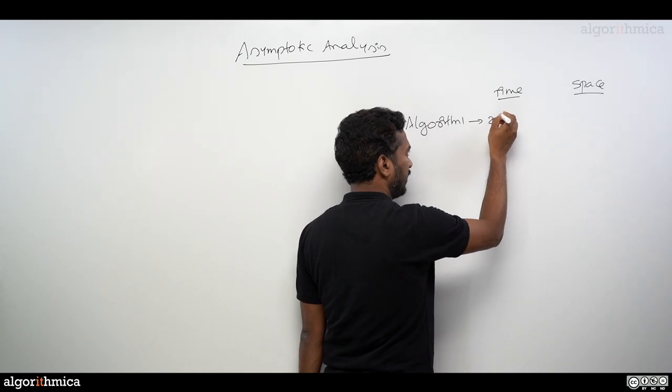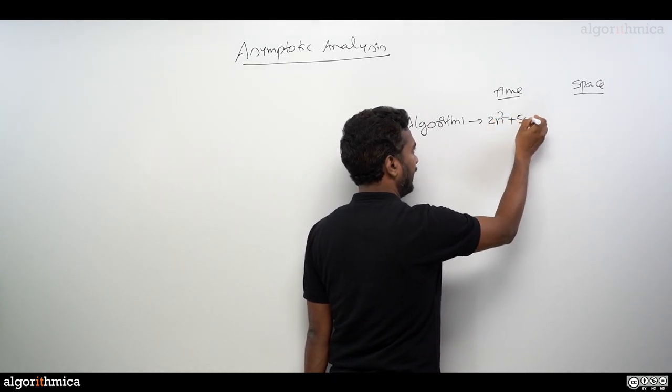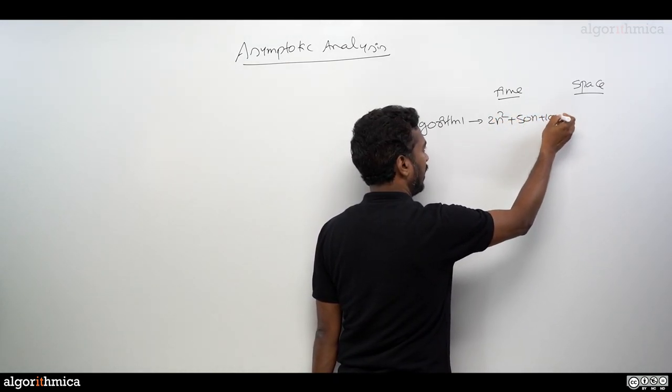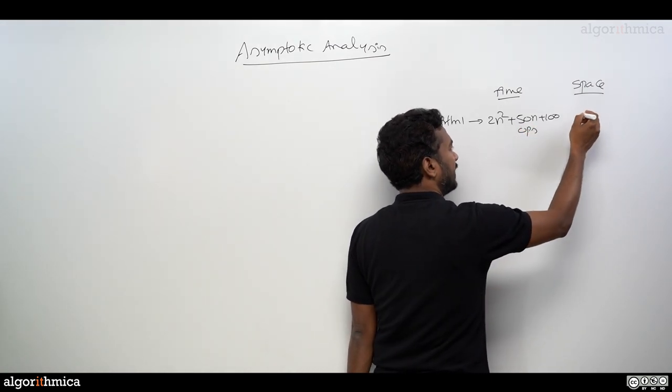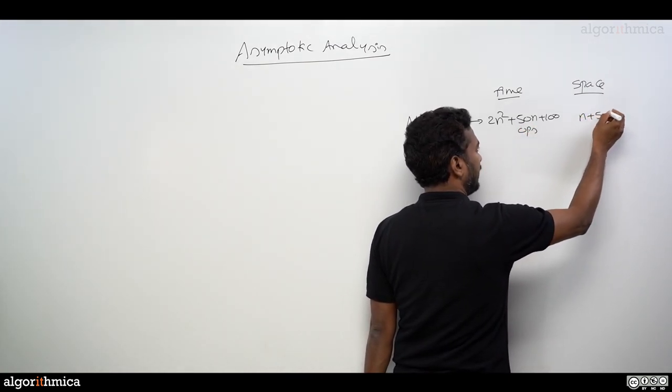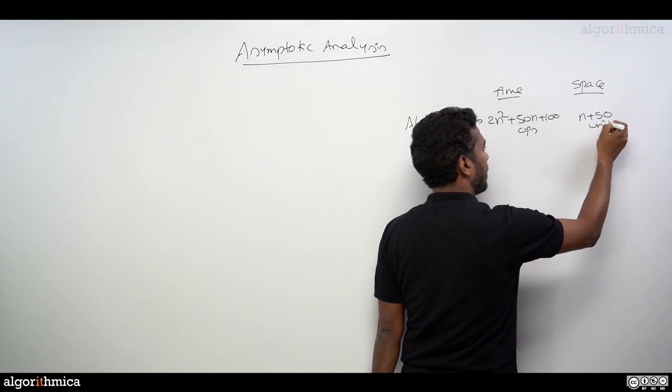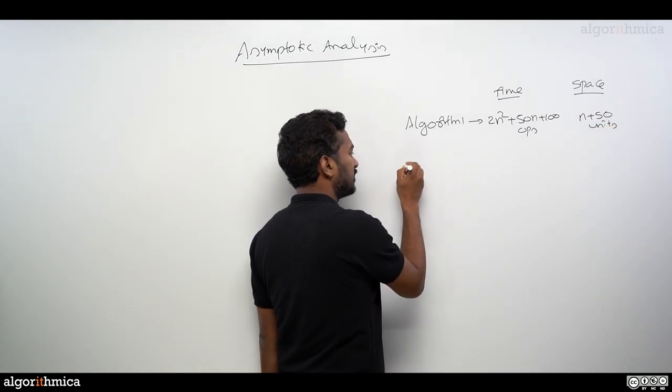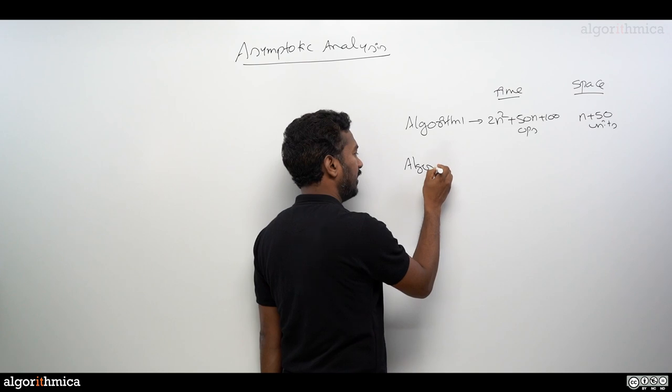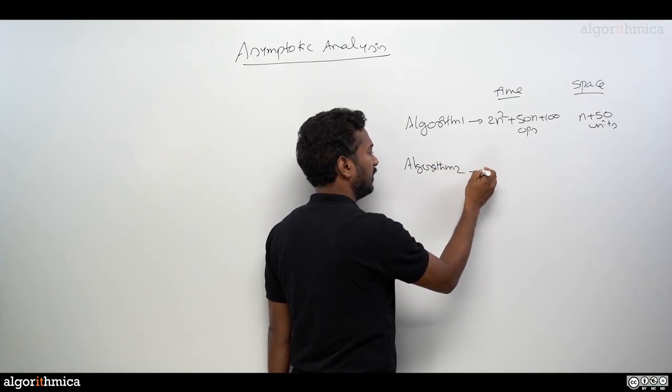Let's say we got Algorithm 1. The time of this, let's say I write it as 2n² + 50n + 100 operations. Space, I write it as n + 50 units.